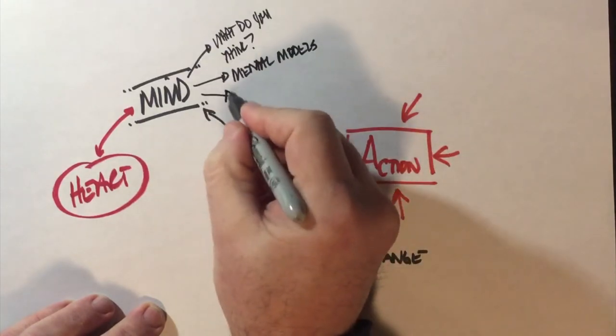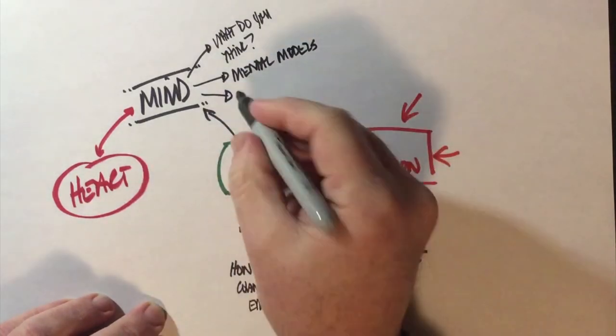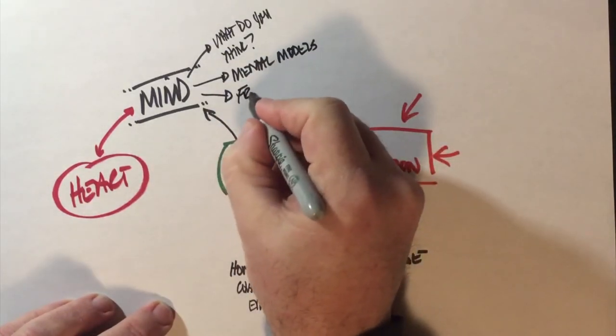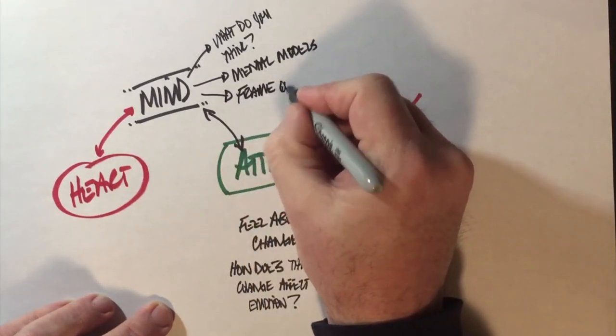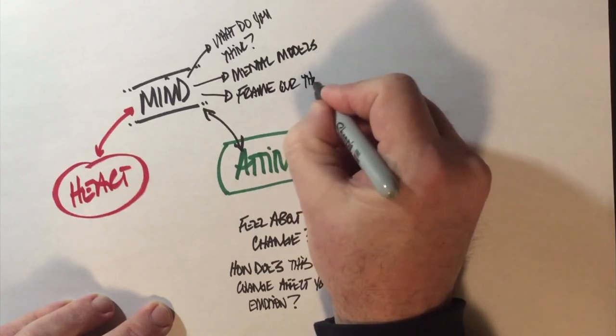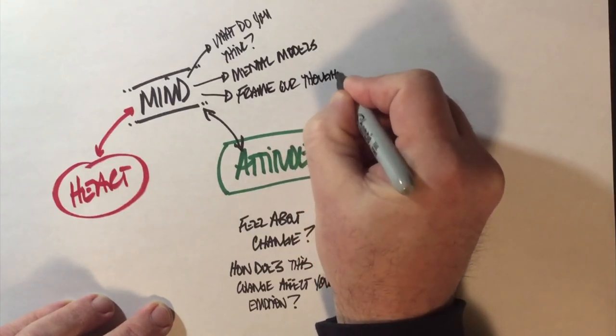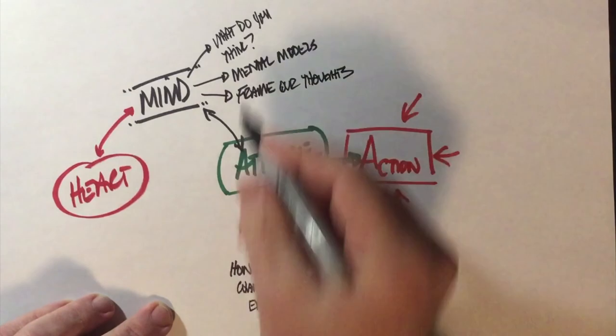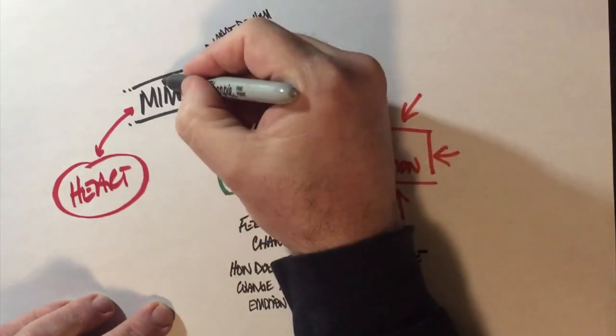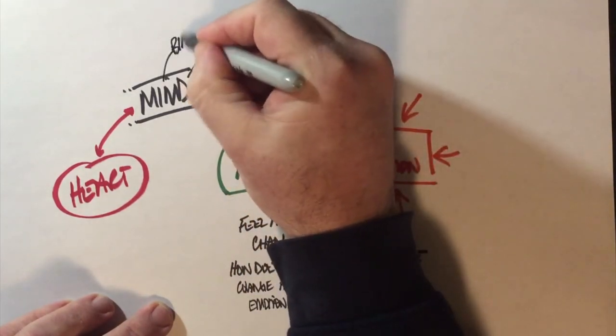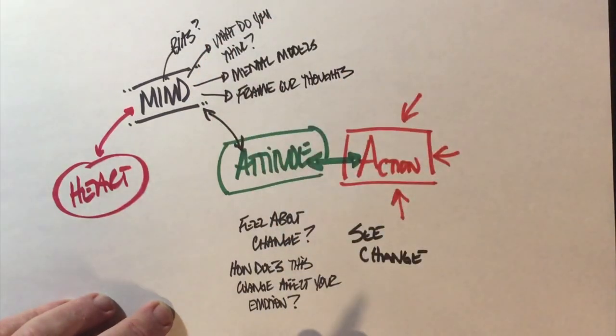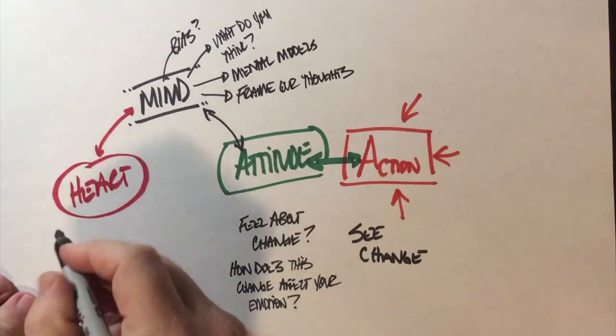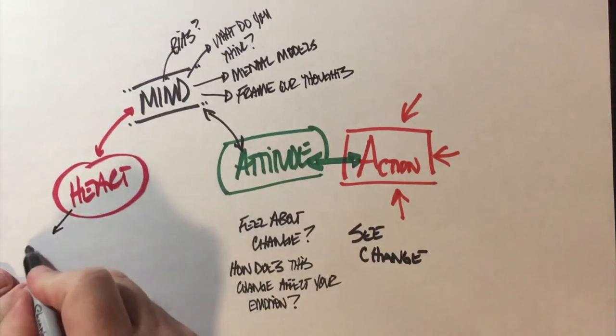One other thing that I'd like to mention here is that the mind also is the place where we frame our thoughts or we frame our perspective. It's in this space here that we can really begin to control some of our attitudes. We can control our responses to certain situations, but the tricky thing about the mind is that we have biases. That's at the root level of our mind - that's where we want to get at in regards to this model in particular.